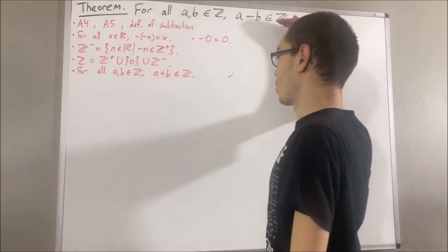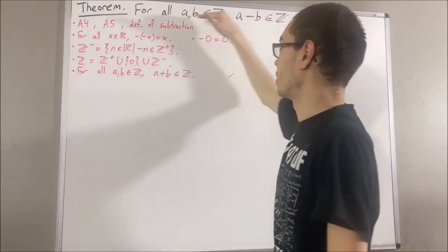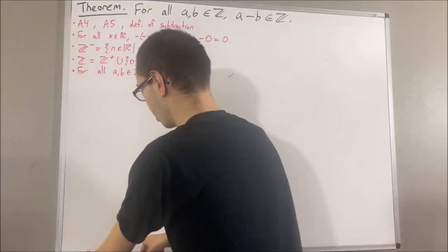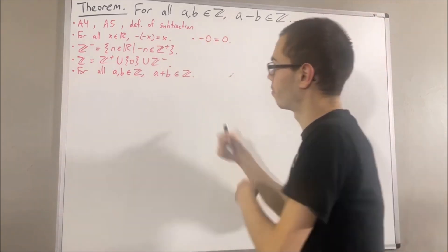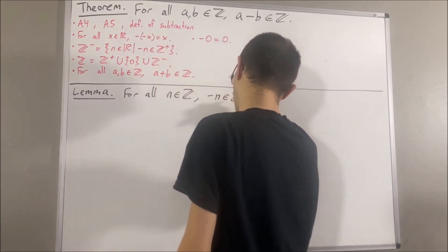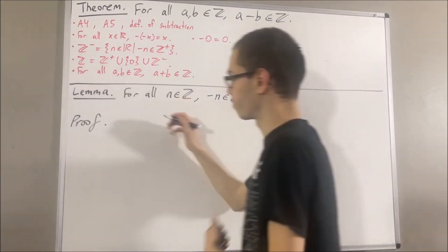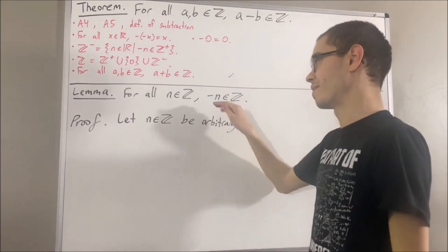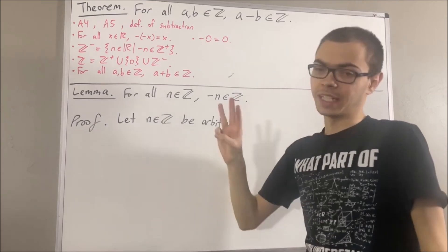Now we're trying to prove the same thing but for subtraction. Before we get into proving this theorem, we are first going to prove a preliminary result: we're going to prove that the negative of any integer is an integer as well. To prove this, let's first consider an arbitrary integer n. The whole goal is to show that the negative of n is an integer, and to do that, we're going to split this up into three cases.